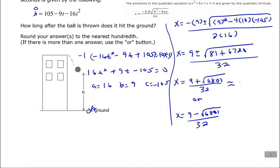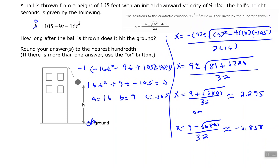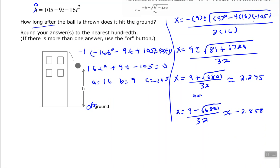For the first one you should get 2.295, and for the second one you should get negative 2.858. Since we're looking at time, time cannot be negative, so the second answer of negative 2.858 is not valid. The only valid time is the positive value, and rounding to the nearest hundredth, t equals approximately 2.30 seconds.